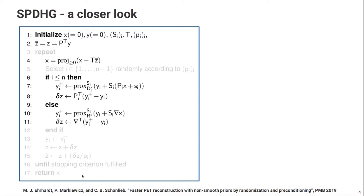Let's have a closer look at the SPDHG algorithm. We first have to initialize an image x, a sinogram y, choose two step sizes s and t and a few probabilities, and we have to initialize two other images z.